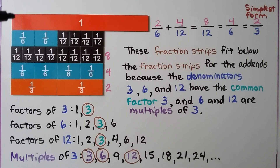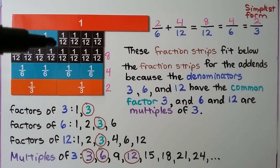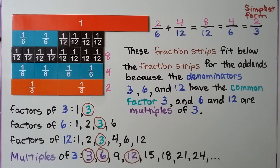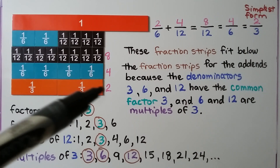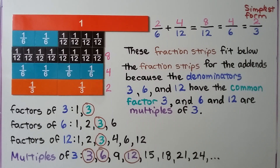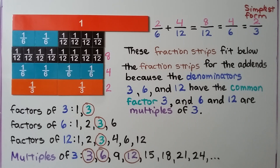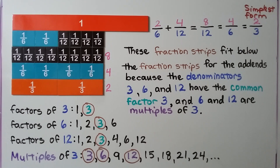Here we have our 1-whole bar and we're adding 2 sixths plus 4 twelfths. We can see it's equal to 8 one-twelfth pieces. It's also equal to 4 one-sixth pieces. It's also equal to 2 one-third pieces, and these fraction strips fit below the fraction strips for the addends. These fit because the denominators 3, 6, and 12 have the common factor 3, and 6 and 12 are multiples of 3. 2 sixths plus 4 twelfths is equal to 8 twelfths, which is equal to 4 sixths, which is equal to 2 thirds. We can see their sides all line up.